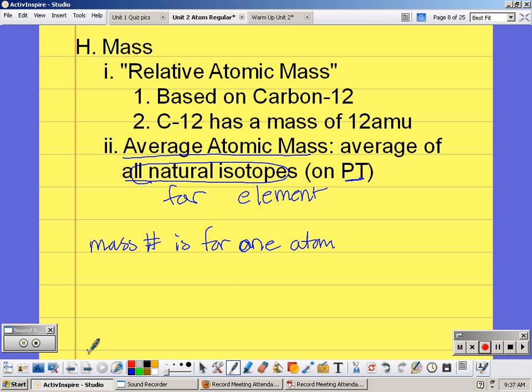So you have one atom, that's the mass number, it has to be a whole number. If you take all the different types of isotopes out there and you average them, then that's the average atomic mass, and that's the one that's on the periodic table, and it's a decimal number.